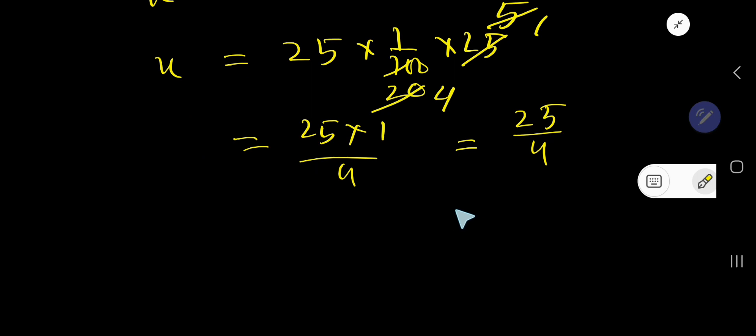4 goes into 25 how many times? 4 times 4 is 16, 4 times 5, 4 times 6 which is 24.